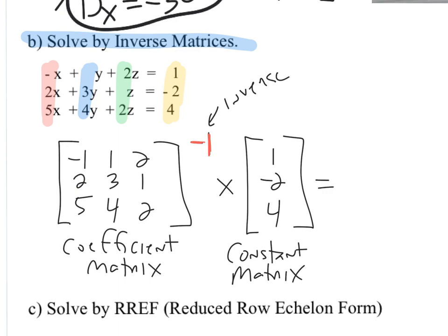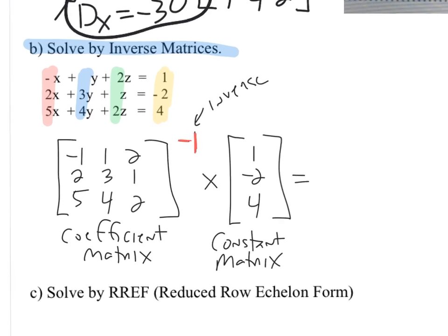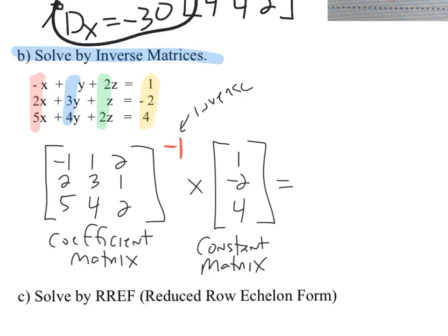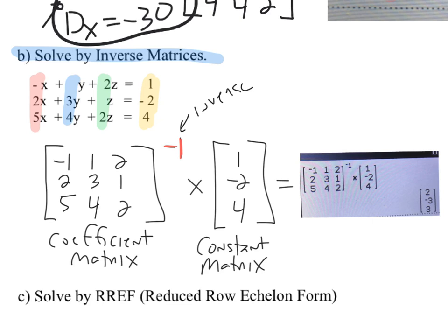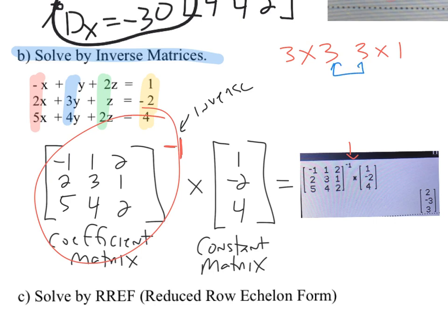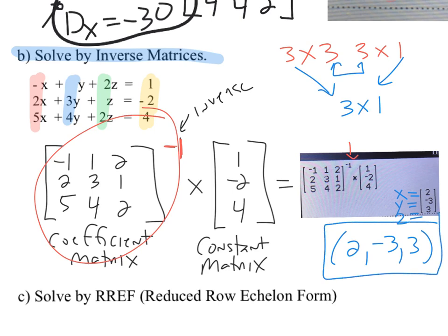Take a minute, multiply those two matrices together, and here's how to interpret the solution. We're multiplying a 3×3 matrix (the inverse of the coefficient matrix) by a 3×1 matrix — the middle numbers match, so multiplication is defined, and the answer is a 3×1 matrix. It turns out x = 2, y = -3, and z = positive 3. Write your answers as an ordered triple — no surprise it matches Cramer's Rule.